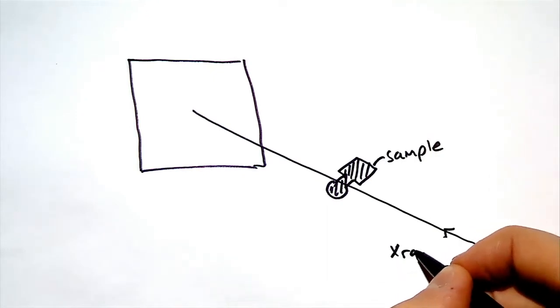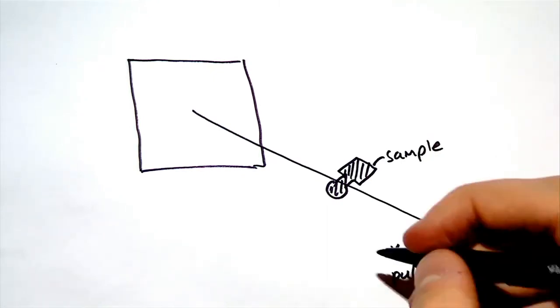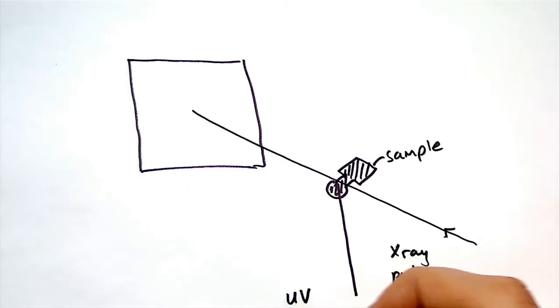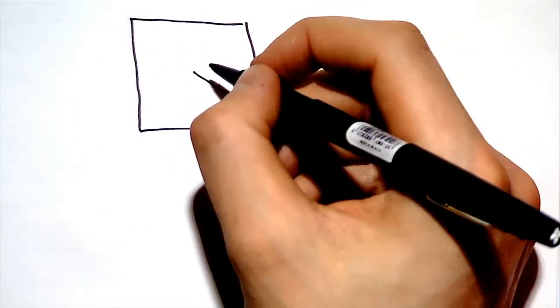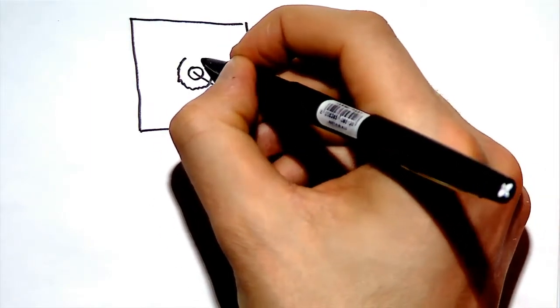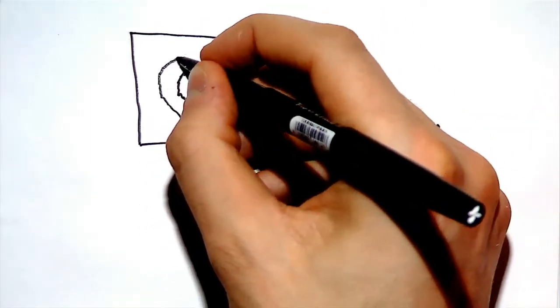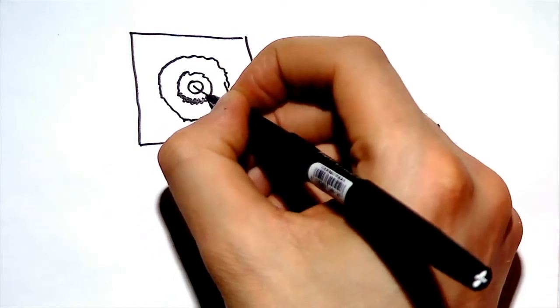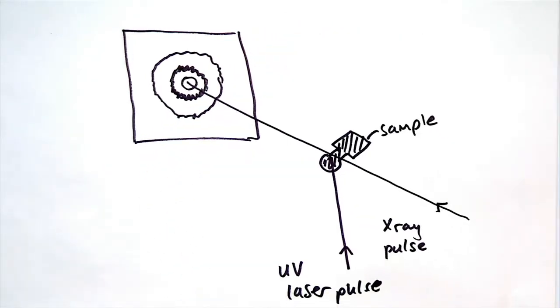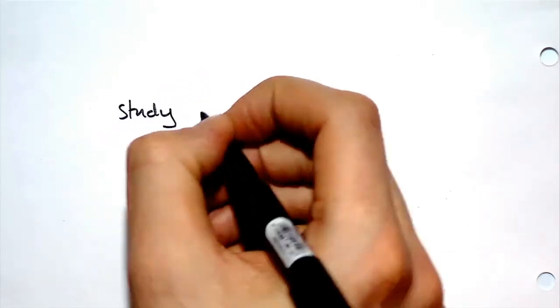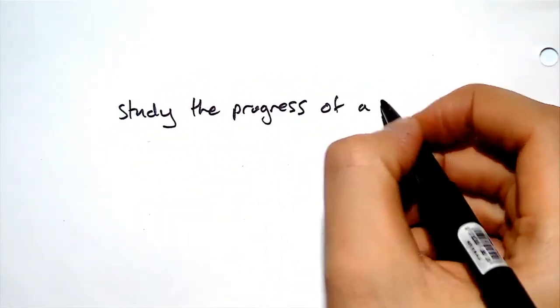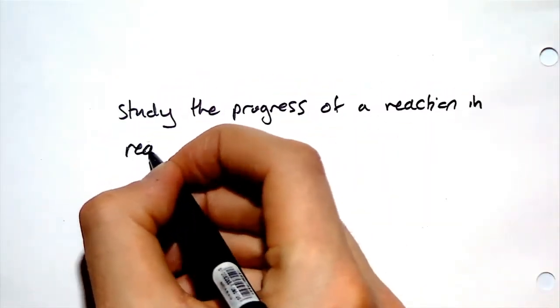Here we again use X-ray diffraction to image how the molecules change with time. The UV laser excites molecules into an excited state or initiates a reaction. We can study the progress of a reaction in real time using the same method we used for the dynamic compression.